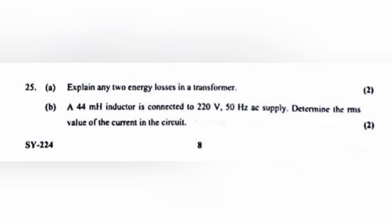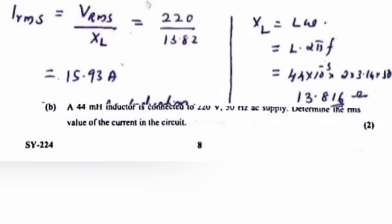Question 25b: A 44 mH inductor is connected to 220 V, 50 Hz supply. Determine the RMS value of the current in the circuit. Answer: I_rms = V_rms / X_L = 220 / 13.82, so the answer is 15.93 ampere.